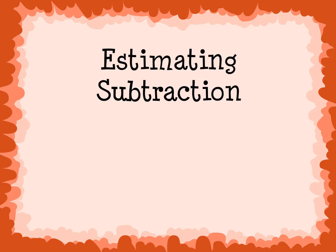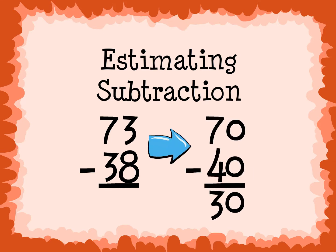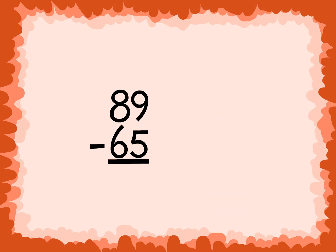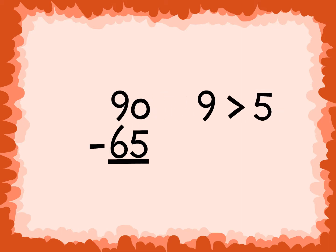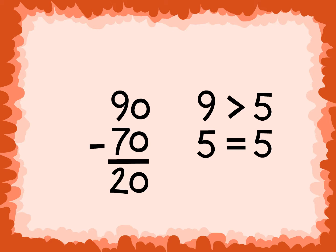Estimating Subtraction: To estimate a 2-digit subtraction problem, we find the closest 10 for each number in the problem. For example, 89 minus 65: find the closest 10. 89 is closer to 90, because 9 is greater than 5, so we round up. 65 is closer to 70, because 5 is equal to 5, so we round up. Now we can easily use mental math to find the estimated difference. 20 is our estimated difference, because 90 minus 70 equals 20.